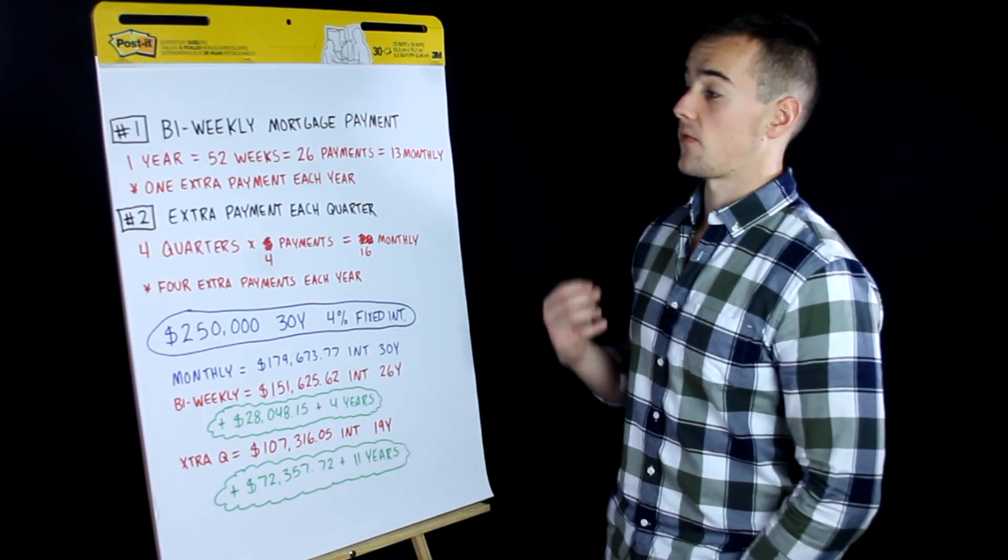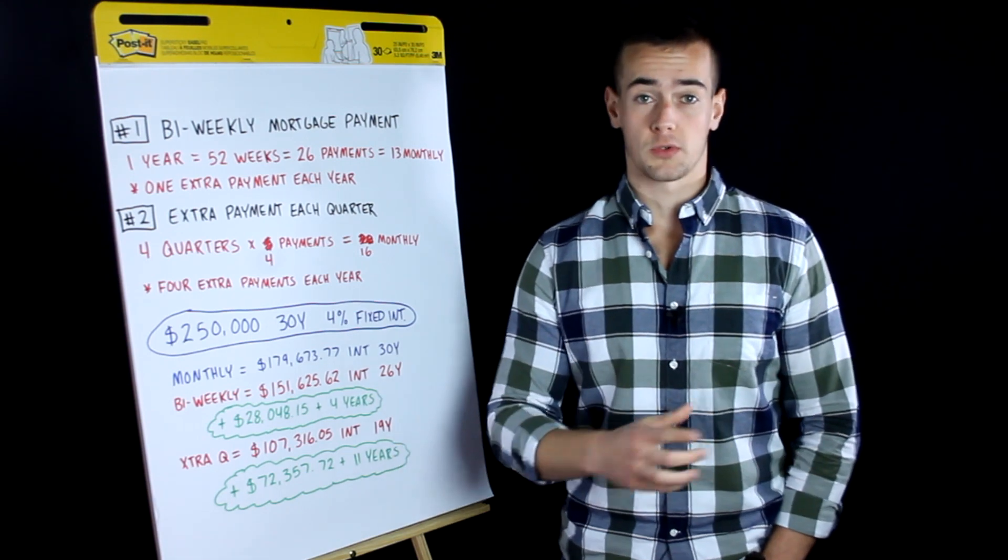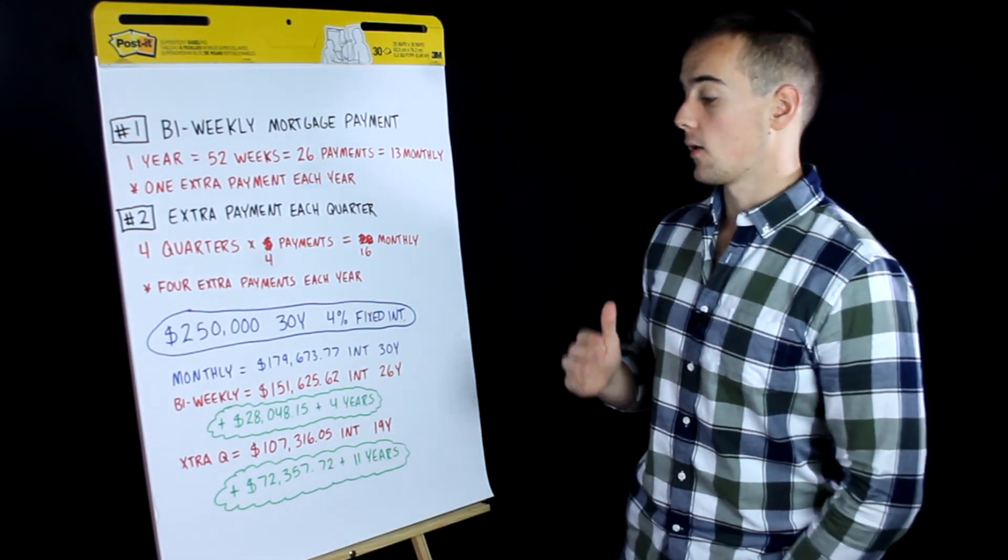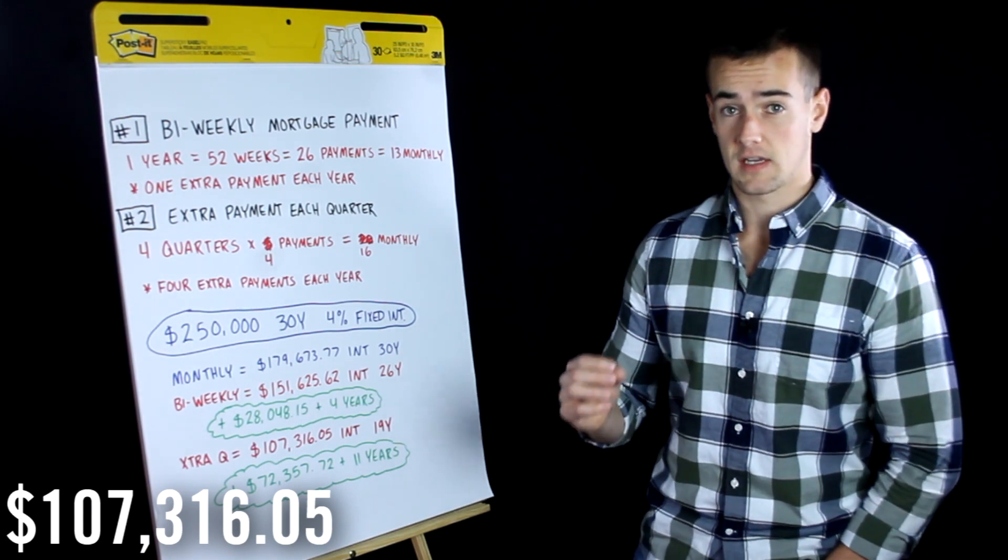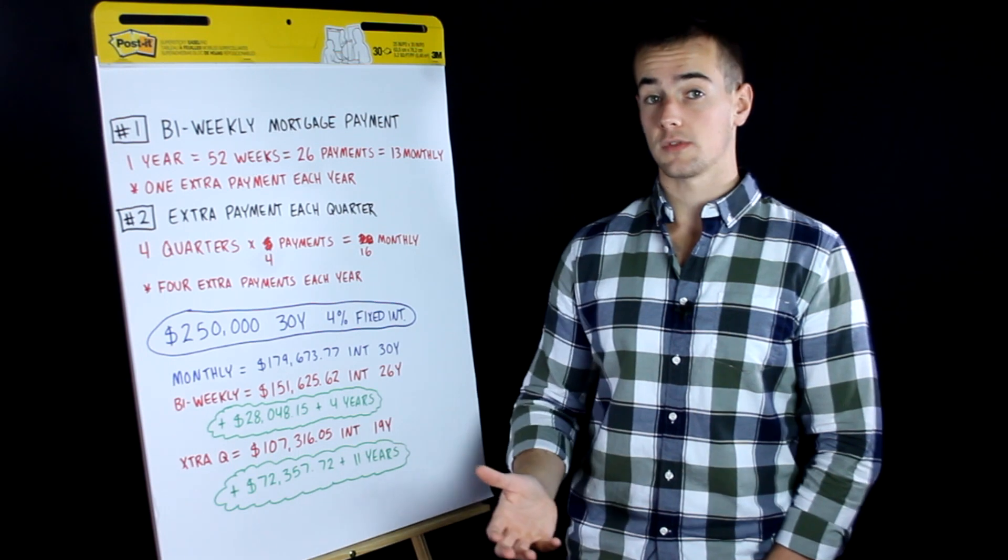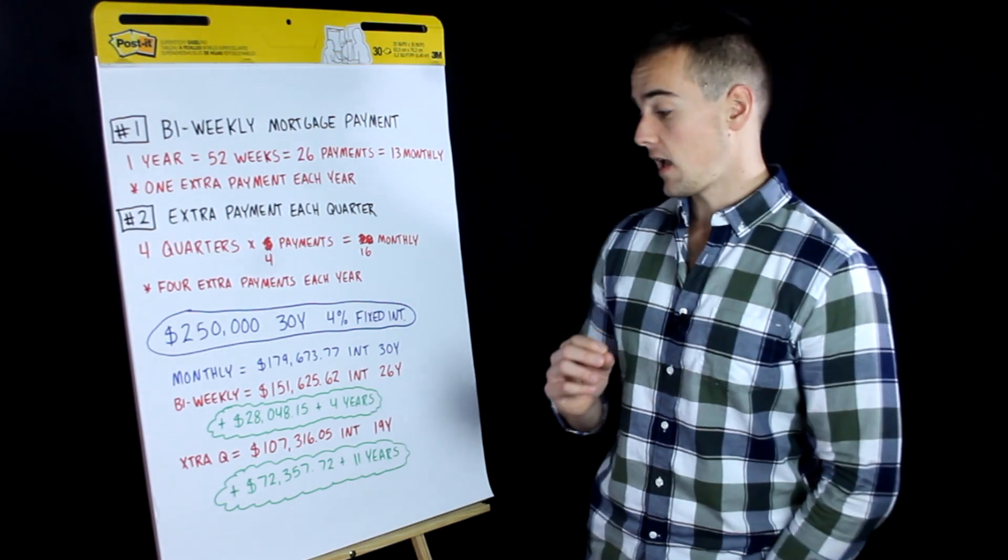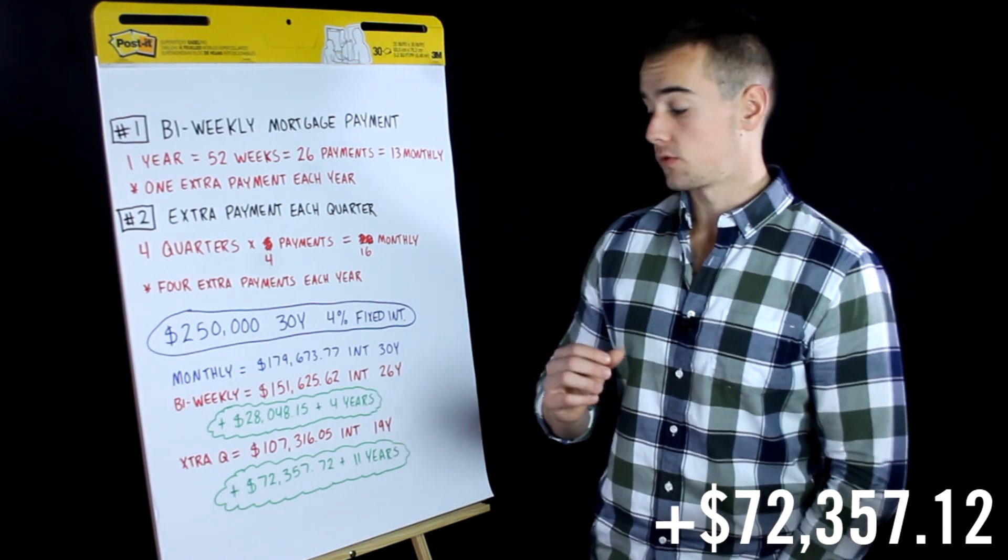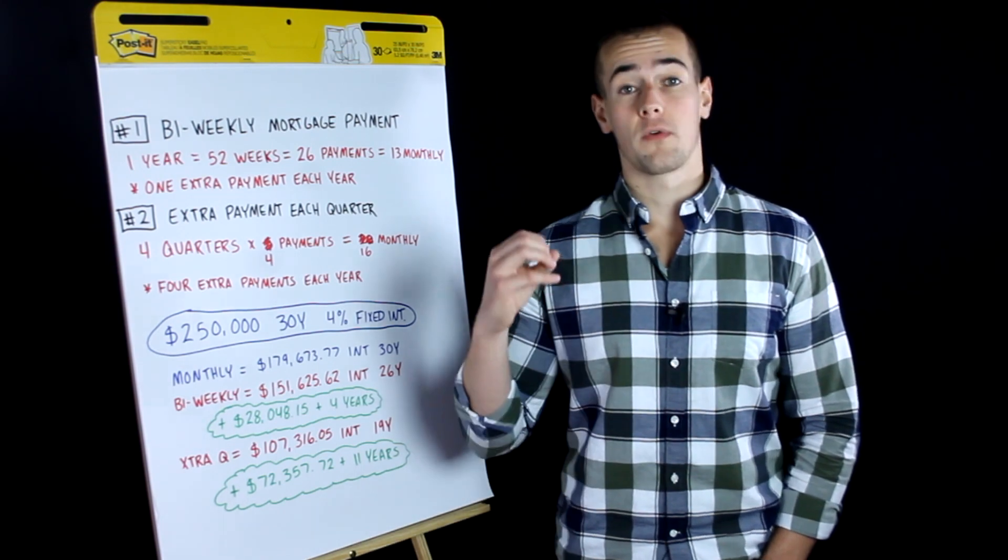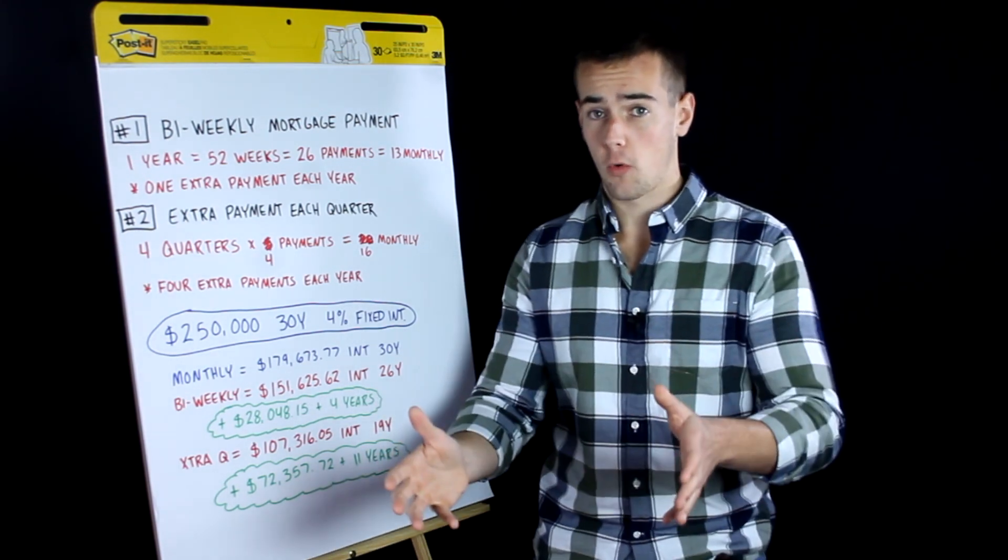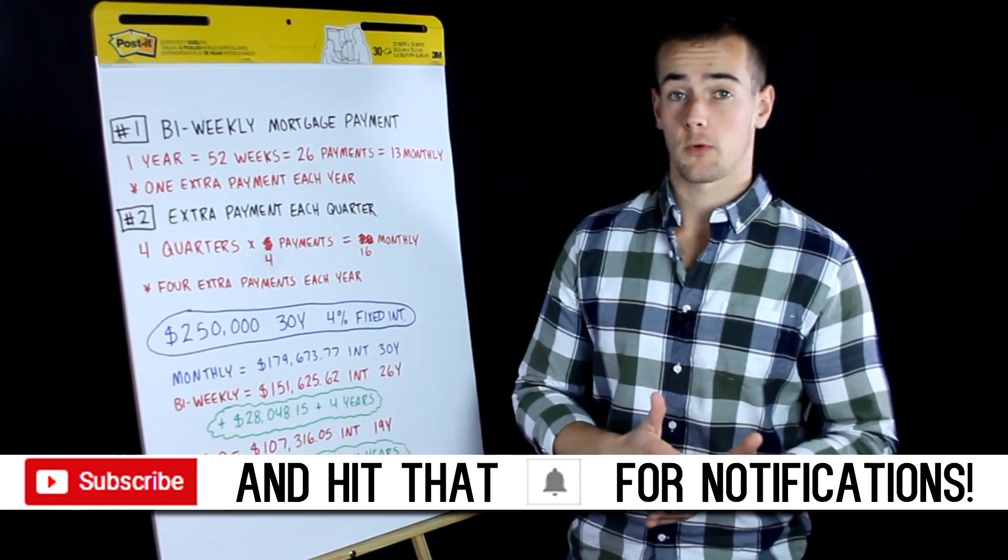Now if you're ambitious and you decide to follow the second strategy and you make one extra payment each quarter, so four extra payments per year, you would be paying $107,316.05 in interest over the course of only nineteen years. So believe it or not, by following that strategy you would save $72,357.12 and also cut eleven years off of your mortgage. So your mortgage just went from a thirty-year mortgage down to a nineteen-year mortgage simply by making one extra payment per quarter.